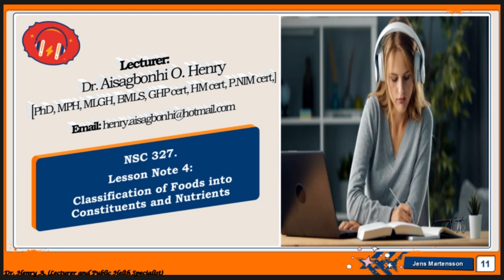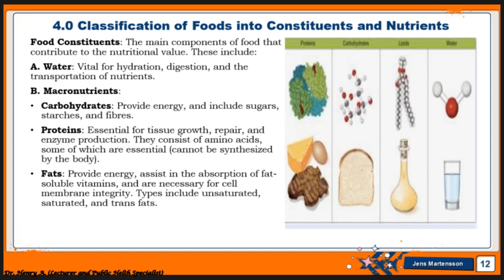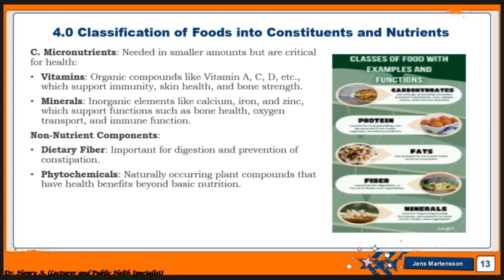Classification of foods into constituents and nutrients. In this class today, we'll be seeing the different classifications of foods. We'll be talking about water, the macronutrients, and the micronutrients, as well as the non-nutrient components. For food constituents, the main components of food that contribute to nutritional value include: number one, water; number two, macronutrients; number three, micronutrients; and then the non-nutrient components.